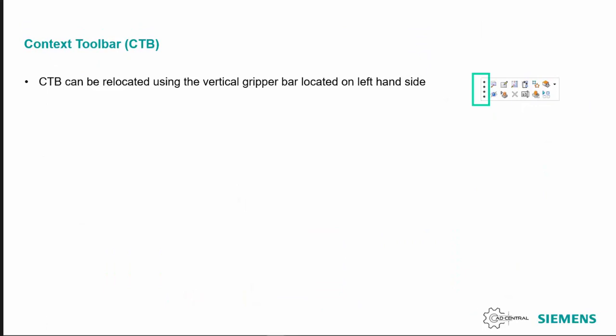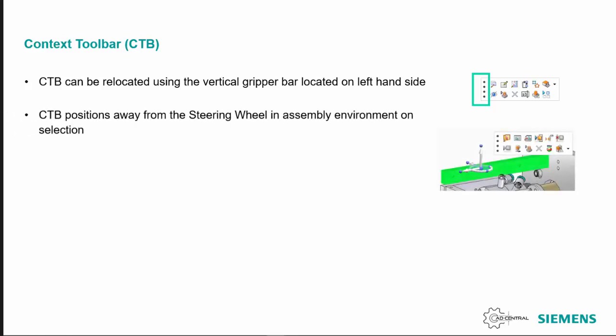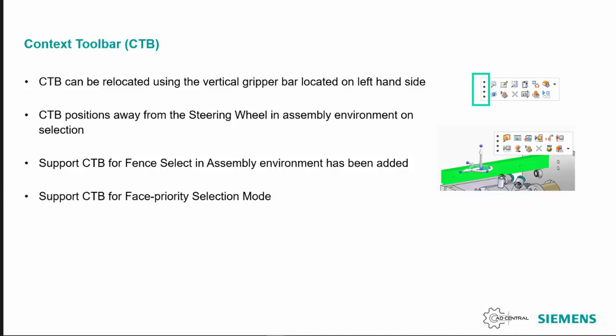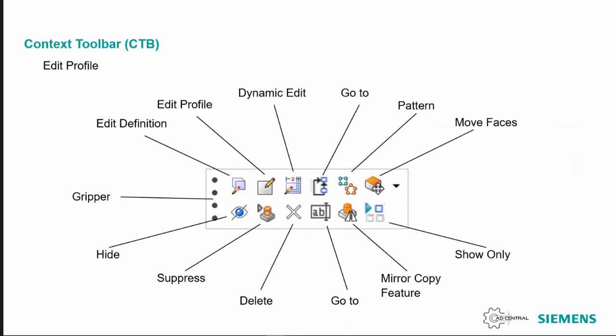The context toolbar can be moved around using the vertical gripper on the left hand side of the toolbar. In assembly it is positioned a little bit away from the steering wheel. It's also supported under a fence select option in assembly, and support for context toolbar in face priority section mode is available as well.